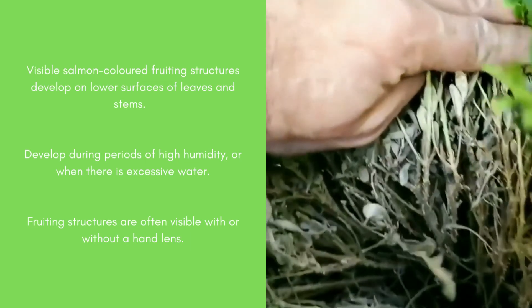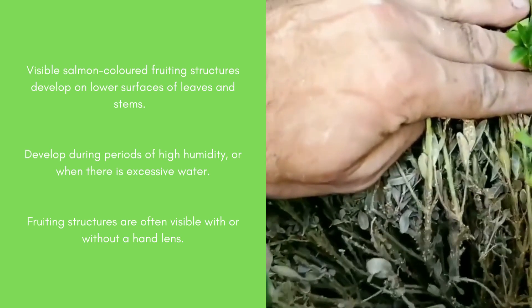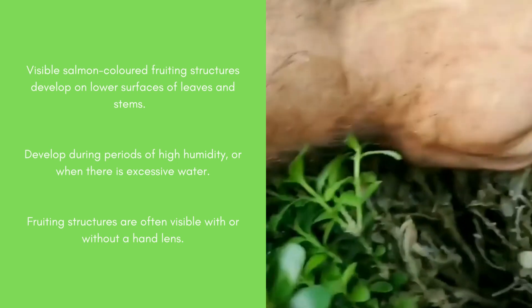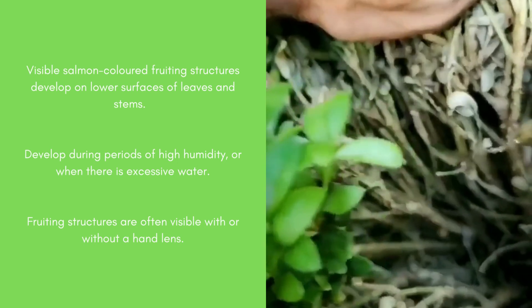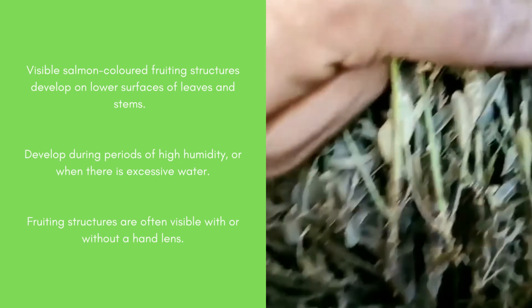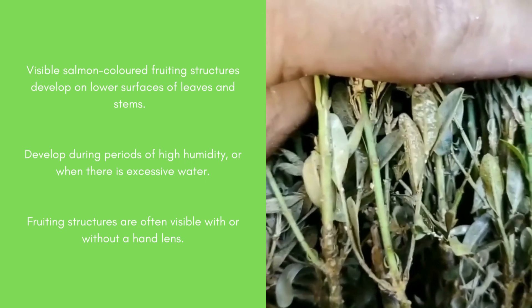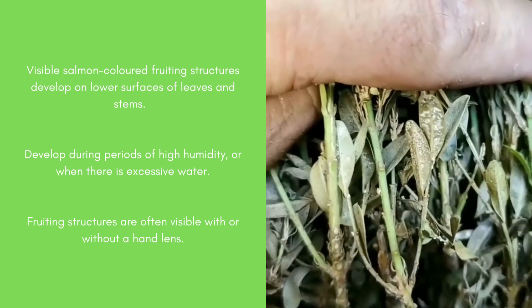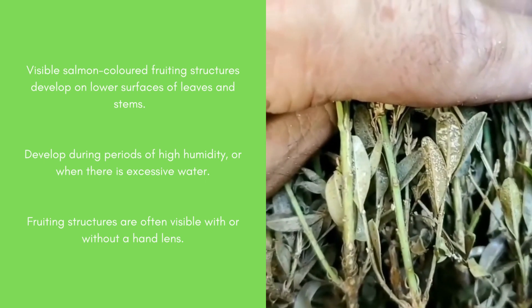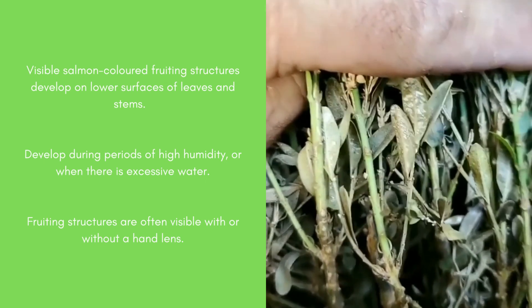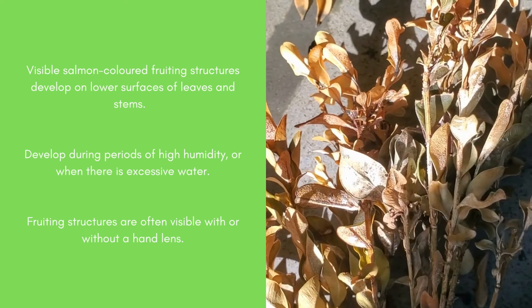During periods of high humidity, salmon-coloured fruiting structures develop on lower surfaces of affected leaves and stems. These fruiting structures are often visible with or without a hand lens.